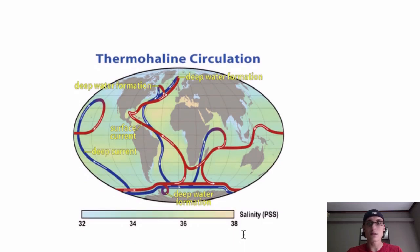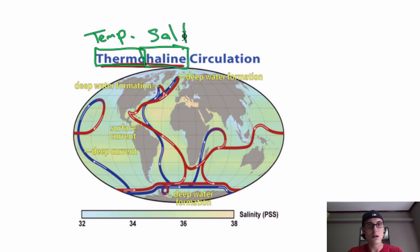The thermohaline circulation has two main important things that you're going to want to remember. The first one is this title: thermohaline. You can break this up into two separate words. Thermal meaning temperature and haline meaning salinity or salt.